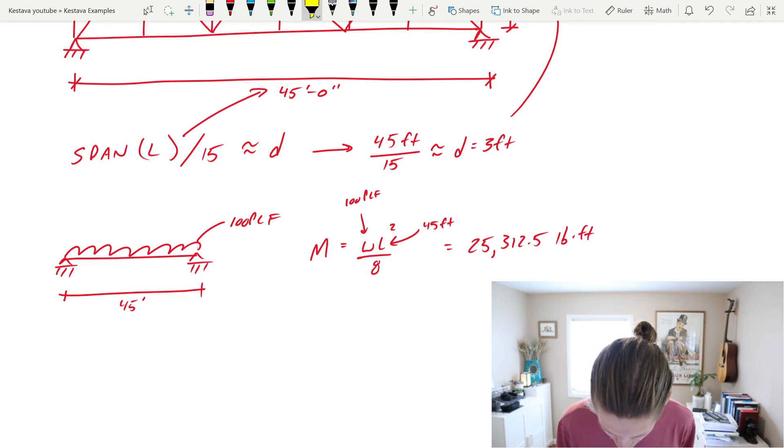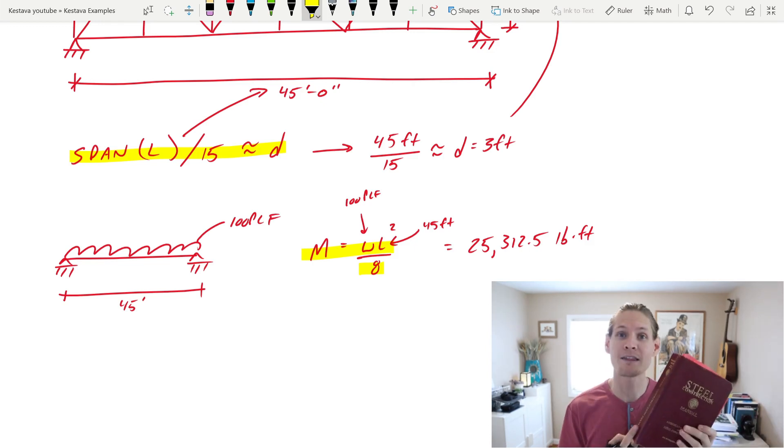As we move along, let's highlight our equations that are handy. So span L over 15 is your approximate depth of your truss. The next that I would lump into this is your moment equation for uniformly distributed load. But remember this is not specific to actual truss design, it's just the equation used to find the maximum bending moment for a simply supported member under a uniformly distributed load. And you can find that moment equation in table 3-23 in this manual.